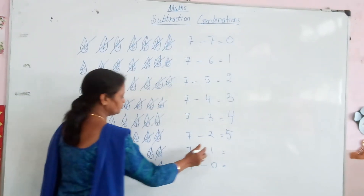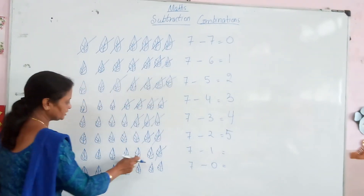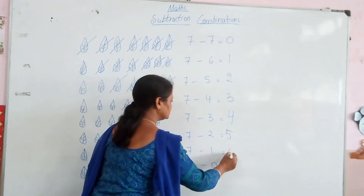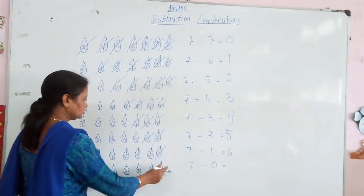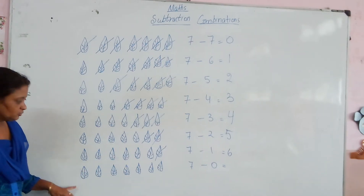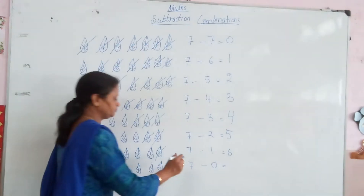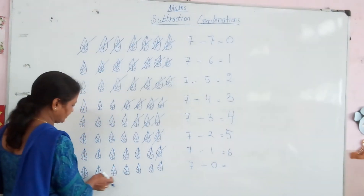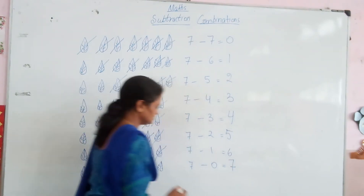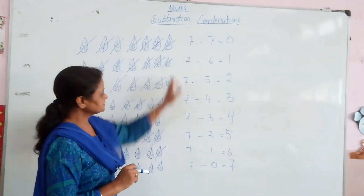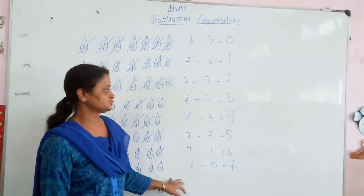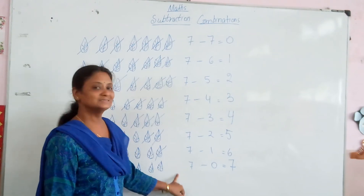Then cross 1. You will get 1, 2, 3, 4, 5, 6. Right? 6. Then no leaves. 0 means no leaves. I have to cut — it means 1, 2, 3, 4, 5, 6, 7. You will get 7. Okay? So these are called the different combinations of the number 7.